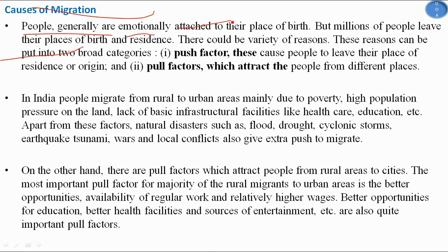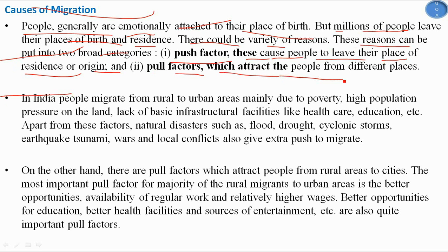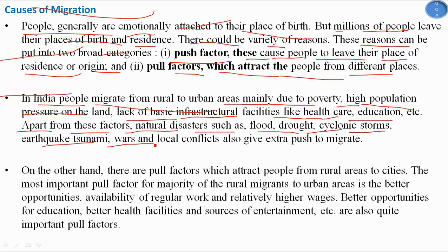People are generally emotionally attached to their place of birth, yet millions leave. The reasons fall into two broad categories: push factors, which cause people to leave their place of origin, and pull factors, which attract them to new places. In India, people migrate from rural to urban areas mainly due to poverty, high population pressure on land, lack of basic infrastructure like healthcare and education in rural areas, and natural disasters such as floods, drought, cyclonic storms, earthquakes, tsunamis, wars, and local conflicts.